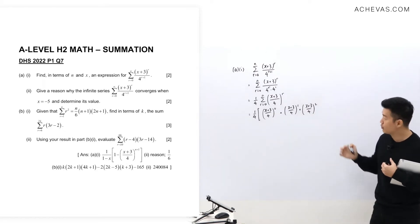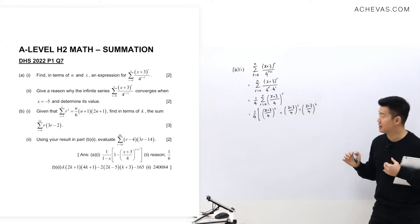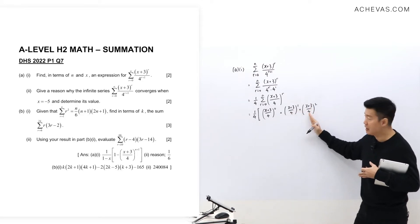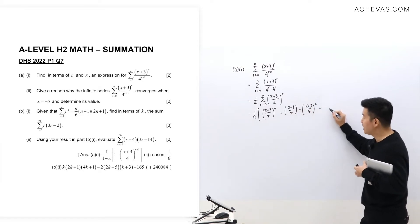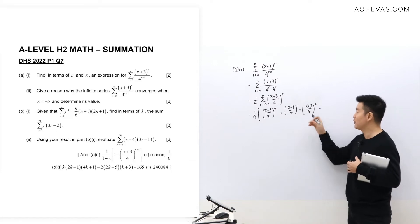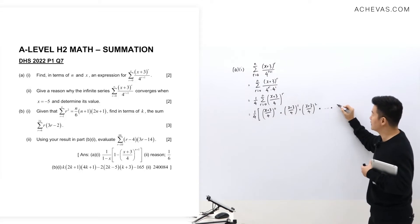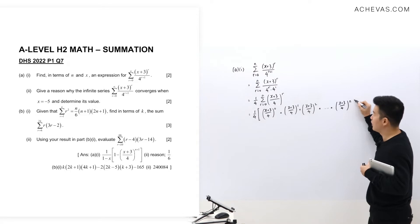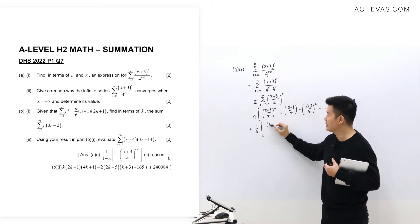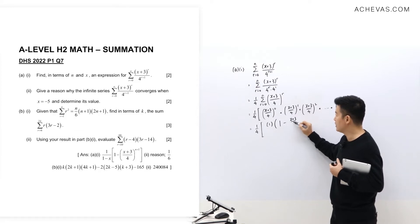So we are seeing a geometric progression with first term 1 and common ratio (x+3)/4, because from one term to the next we multiply by (x+3)/4 each time. Continuing this pattern, the last term will be (x+3)/4 to the power of n. So we have a GP with first term 1 and common ratio (x+3)/4.